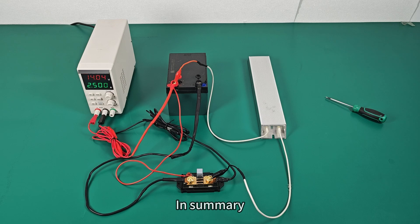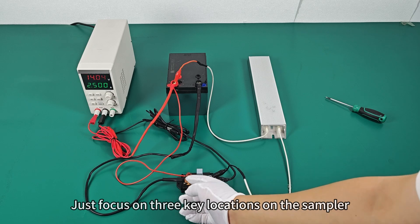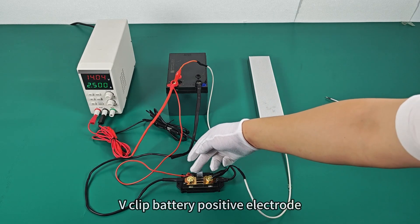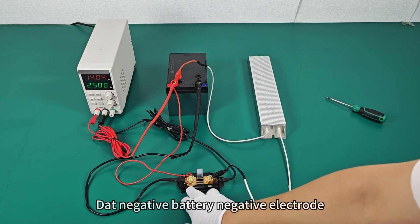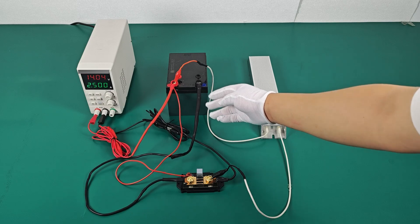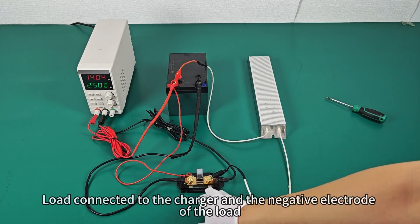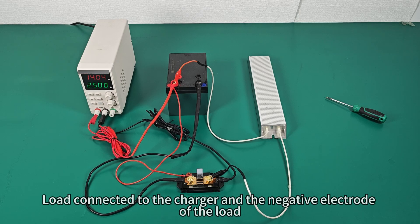In summary, wiring just focuses on three key locations on the sampler: battery positive electrode, battery negative electrode, and load connected to the charger and the negative electrode of the load.